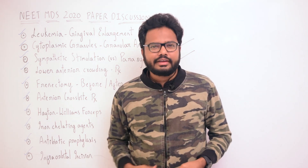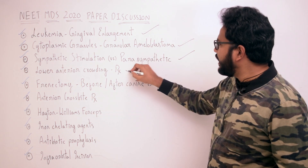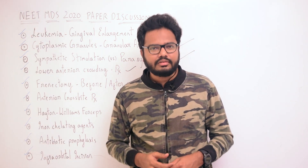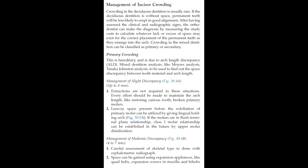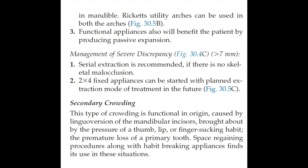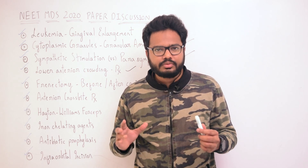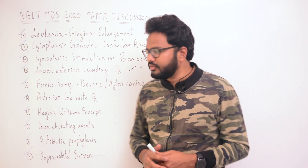Moving on to management of lower anterior crowding. Depending upon the severity of crowding, we have different management strategies: primary and secondary crowding. For primary crowding, management depends on discrepancy — slight discrepancy up to 4 mm, moderate discrepancy 4 to 7 mm, and severe discrepancy more than 7 mm, in which case we go for serial extraction as well as 2-into-4 fixed appliances.